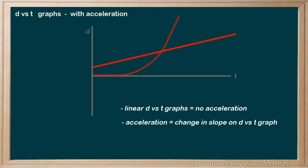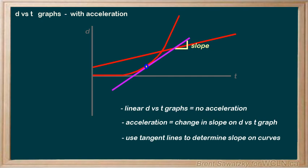Acceleration is seen on a d versus t graph as a change in slope, and therefore we see a curve. And when we have a change in slope, we can determine the instantaneous velocity at any point using tangent lines.